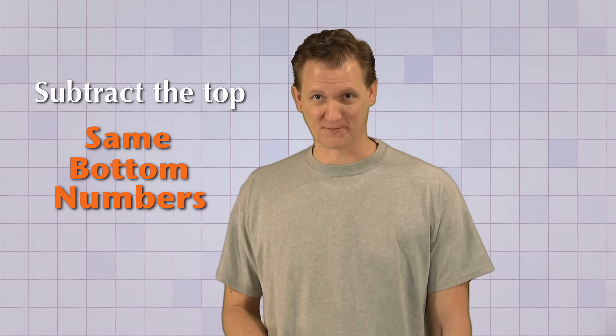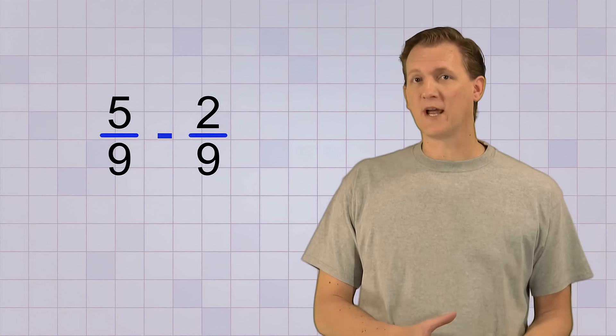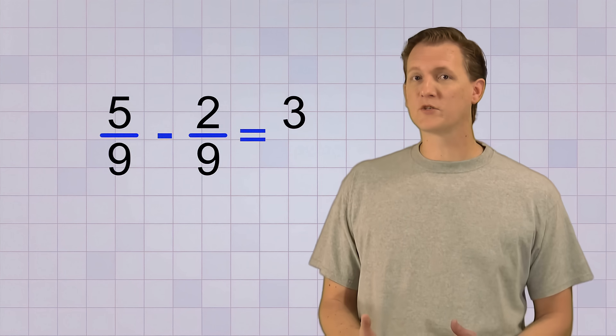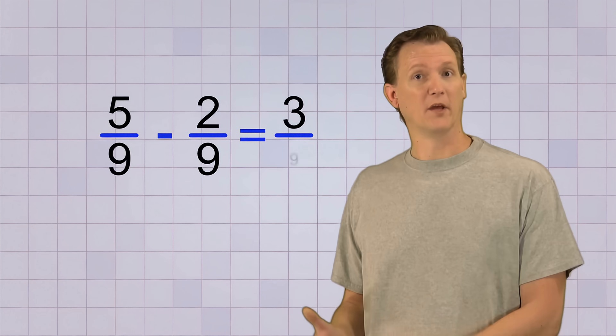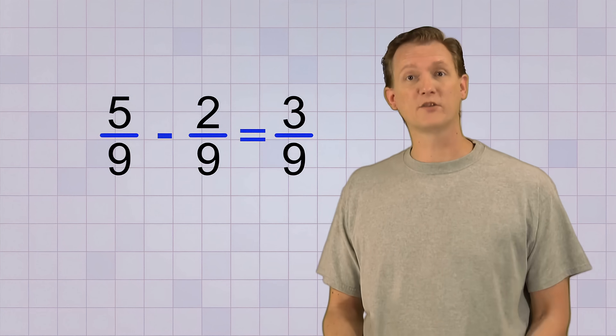But what about subtracting fractions? Does that work the same way? Yep, if the bottom numbers are the same, all you have to do is subtract the top numbers and keep the same bottom number in your answer. Here's an example of subtracting fractions with the same bottom numbers. 5 over 9 minus 2 over 9. First, we subtract the top numbers. 5 minus 2 equals 3. Then we just write the same bottom number in our answer, 9. So, 5 over 9 minus 2 over 9 is 3 over 9.